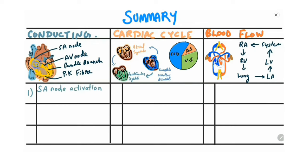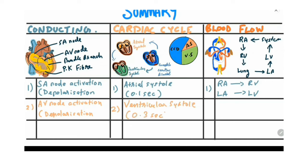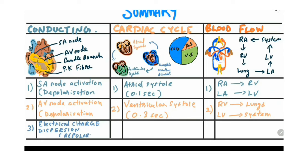To summarize the conducting system, cardiac cycle, and blood flow: when the SA node is activated, atrial contraction occurs, taking about 0.1 second, pushing blood from the atrium to the ventricles. When the AV node depolarizes, it causes ventricular systole, taking about 0.3 second, enabling the ventricles to pump blood into the lungs and the system. When there is no electrical charge and the current disperses, complete cardiac diastole occurs, taking about 0.4 second, during which blood returns to the right and left atrium, and this cycle is repeated throughout our life.